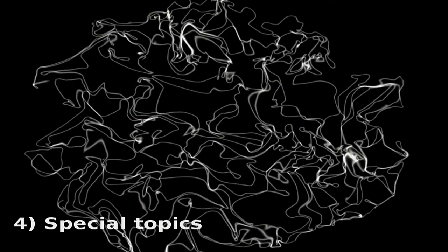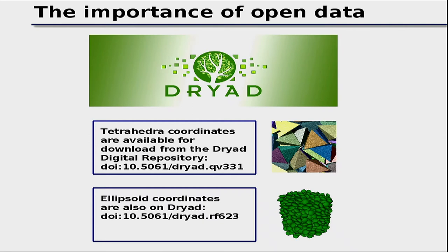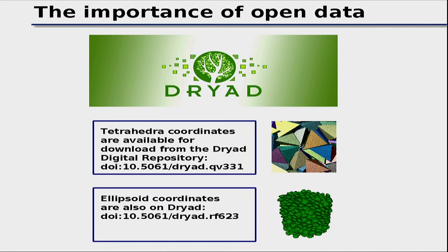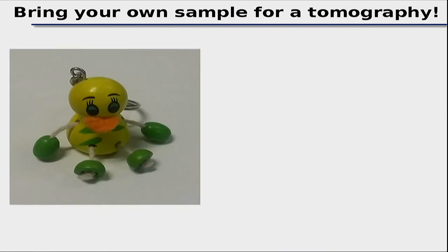A closing point: our community does not share data openly enough. Datasets from packings of tetrahedra or ellipsoids take enormous effort to collect and analyze, yet they often sit on hard drives unused by others. We should use repositories like Zenodo to share raw data — it should almost be obligatory for anyone using such equipment. And for the hands-on session: bring your own sample.